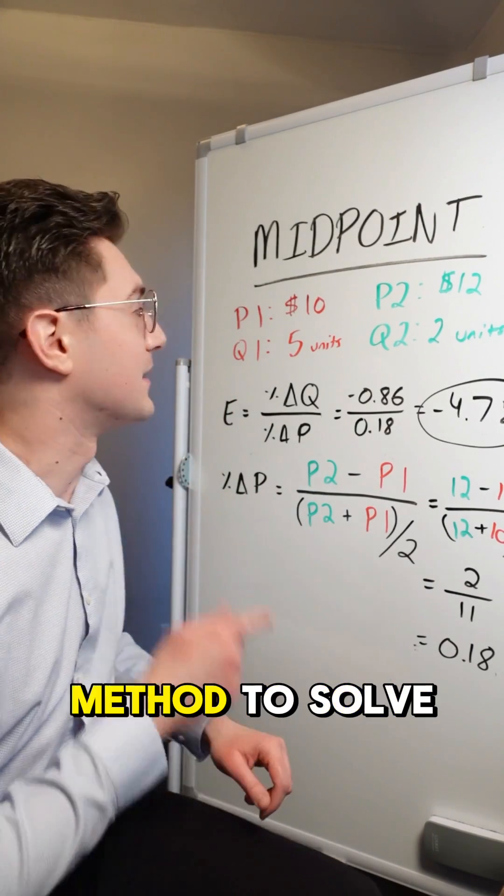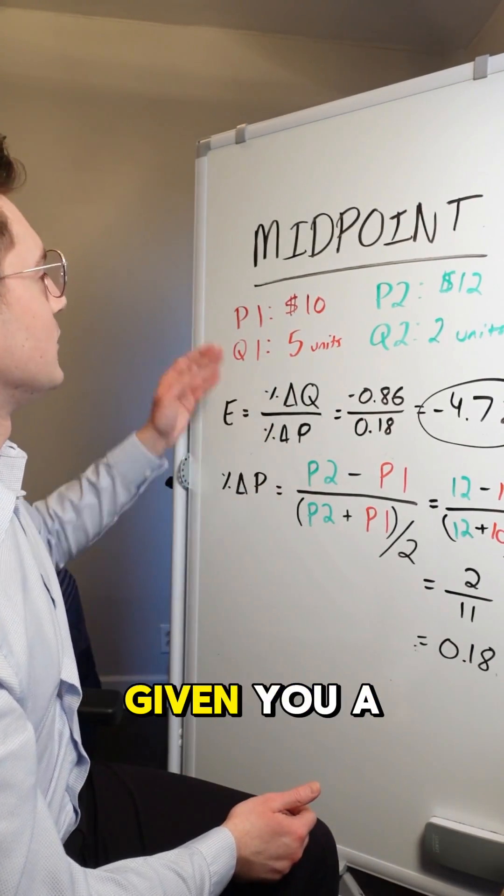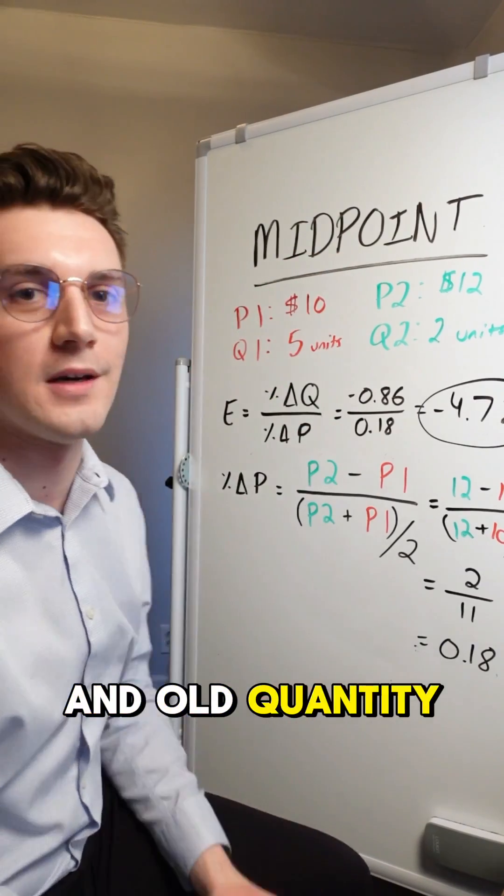And you'll know you need to use the midpoint method to solve if the problem is giving you a new and old price value and a new and old quantity value.